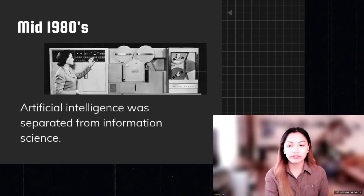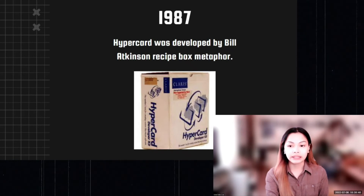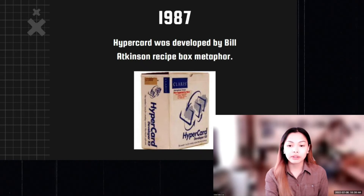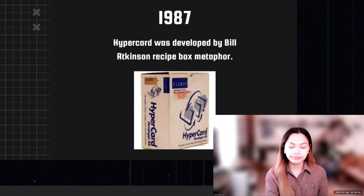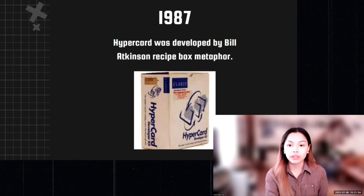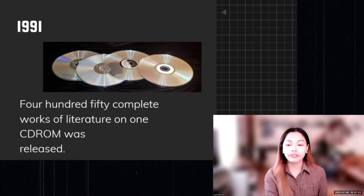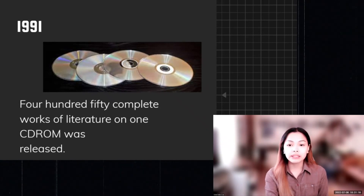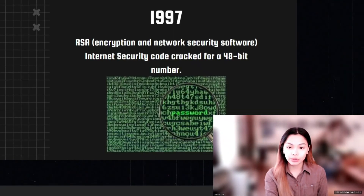In 1987, HyperCard was developed by Bill Atkinson using a Recipe Box metaphor, commercially available in 1987. HyperCard is a useful development tool for a wide range of applications, including multimedia presentations and computer-based training materials, with a built-in scripting language called HyperTalk. In 1991, 450 complete works of literature on one CD-ROM were released. The concept had been largely neglected after 1974. In 1982, Japanese company Denon developed what we know as the CD-ROM and introduced it with Sony at a computer show in 1984.